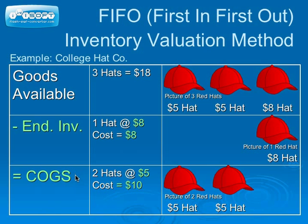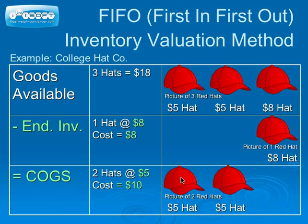The column on the left shows a portion of the cost of goods sold formula. The cost of goods available for sale is $18 for three hats. Under FIFO, the first two hats purchased at $5 each were sold. Therefore, the ending inventory would be one hat most recently purchased at $8, and the cost of goods sold would be two hats first purchased at $5, or $10 in total.